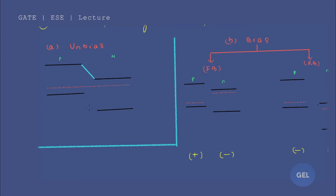This region here is the depletion layer in the unbiased case. When the PN junction is formed, the P-side has positive ions and the N-side has negative ions, generating a potential barrier. QV₀ is the amount of energy required to move an electron from the N-side to the P-side across this barrier. Voltage multiplied by charge gives the energy unit — that is QV₀.